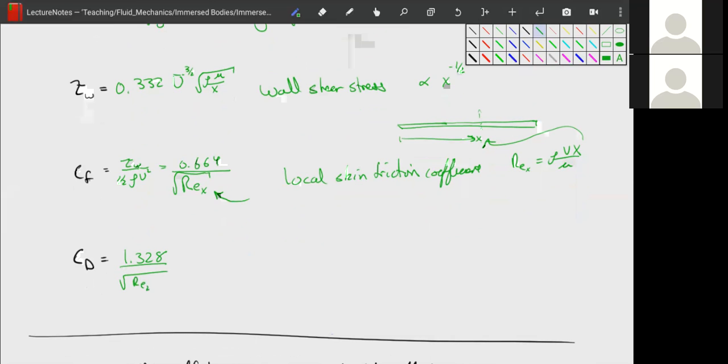Which is equal to our F drag. As we know, our drag coefficient has to be equal to one half rho u squared times the area of our plate. And this is our friction drag coefficient.